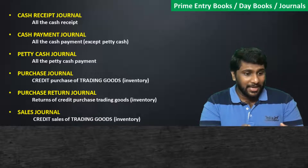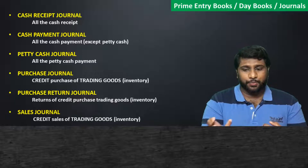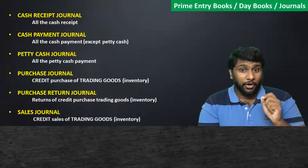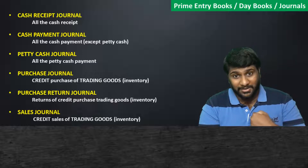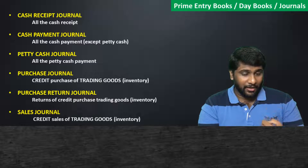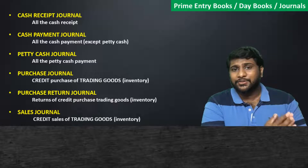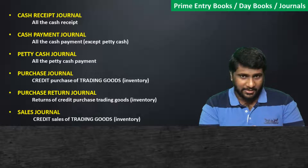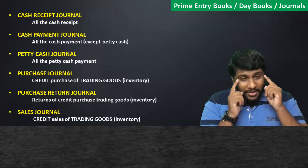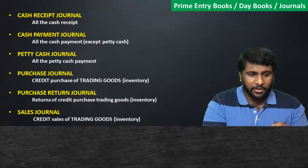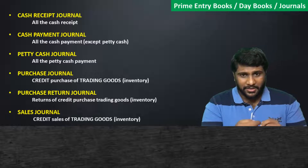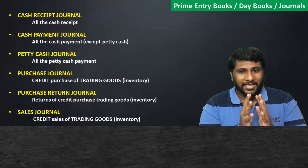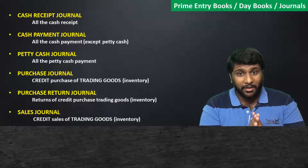The next journal is the sales journal. When it comes to sales, businesses sell trading goods, and sometimes they may also dispose of non-current assets. However, we are only talking about sales of trading goods. Sales can be cash sales or credit sales. Whatever the cash sales should be recorded in the cash receipt journal — if you sell tables for cash, you receive cash, so it goes in the cash receipt journal.